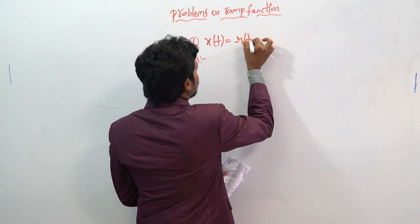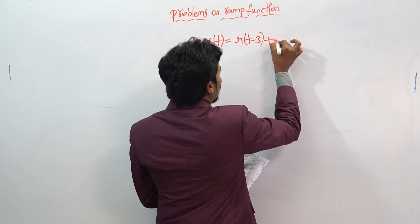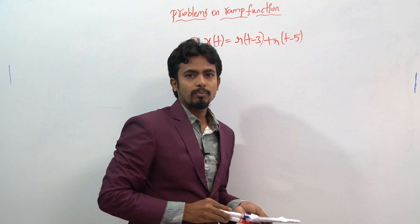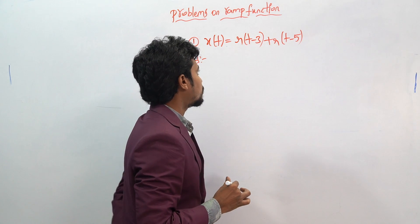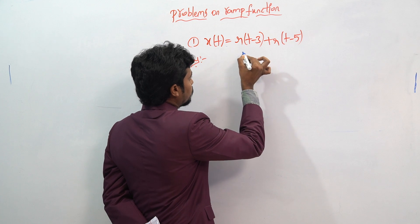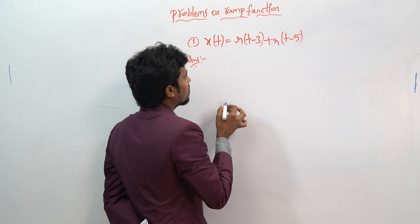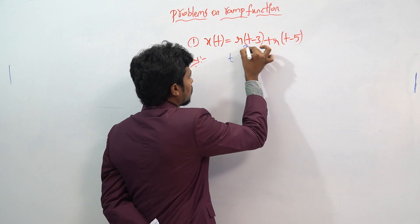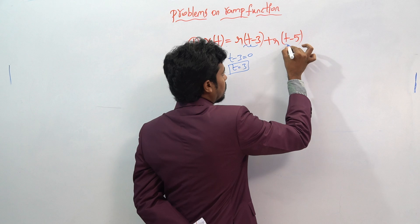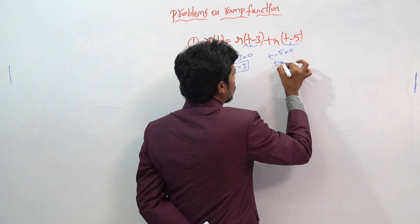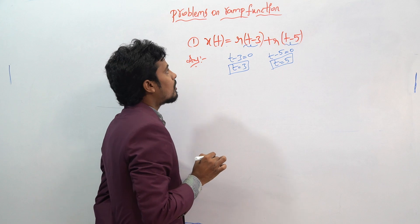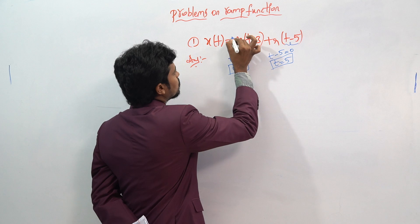The next question: x(t) = r(t-3) + r(t-5). This is an interesting and somewhat shifted plot. First, set the bracket values equal to 0: t minus 3 equals 0 gives t equals 3, and t minus 5 equals 0 gives t equals 5. No slope is given, so we assume a default slope of 1 for each term.